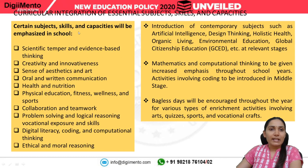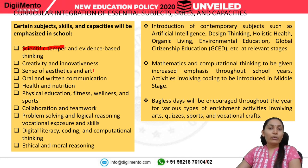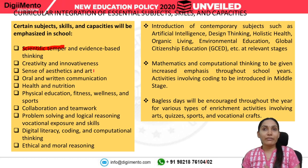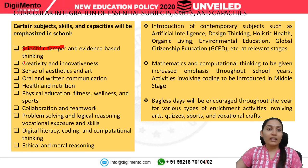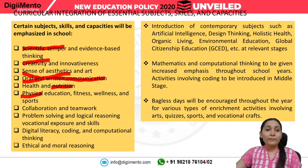Certain subjects, skills, and capacities will be emphasized. The focus has shifted from merely providing bookish knowledge to holistic development of the student. Areas of emphasis include: scientific temper and evidence-based thinking, creativity, innovativeness, sense of aesthetics, oral and written communication, health and nutrition, physical education, collaboration and teamwork, problem solving and logical reasoning, digital literacy, and ethical and moral reasoning.